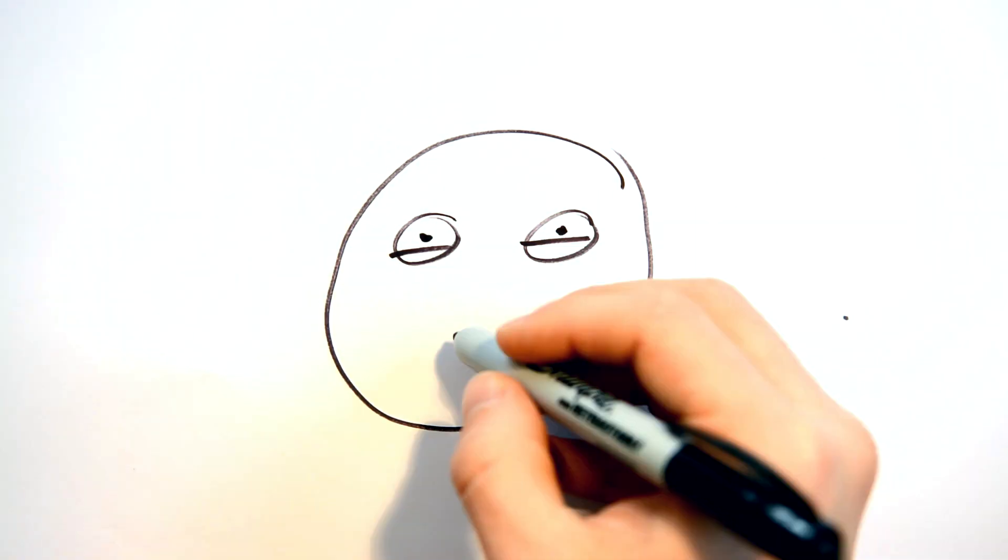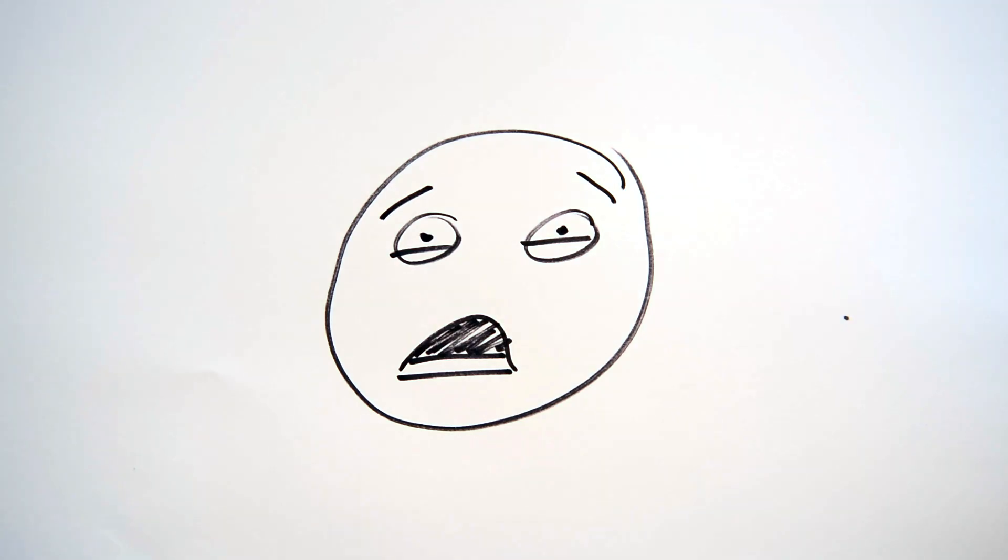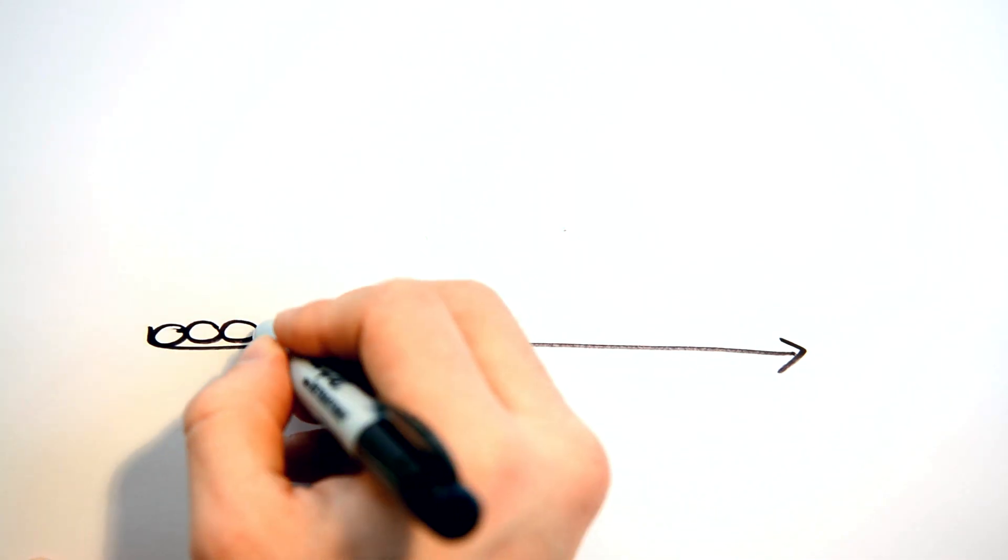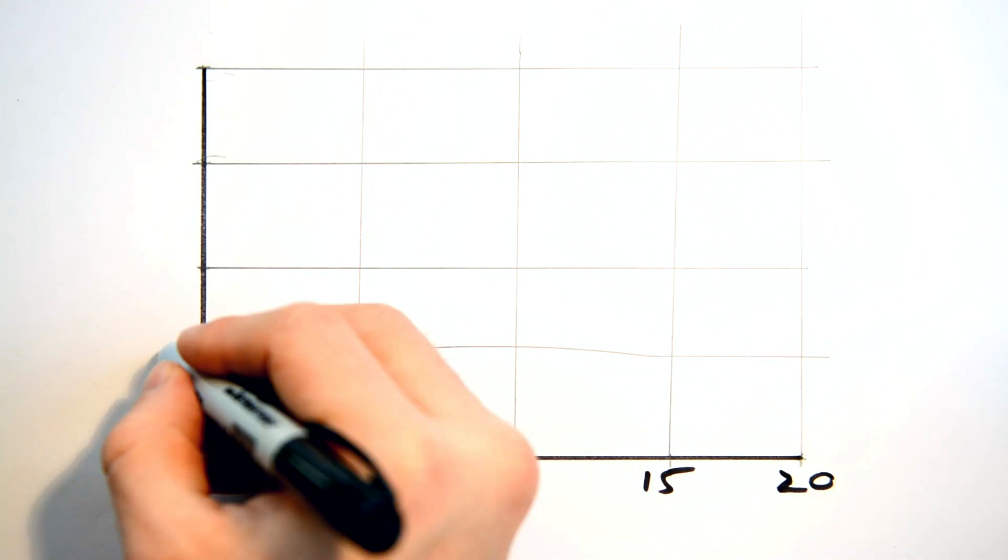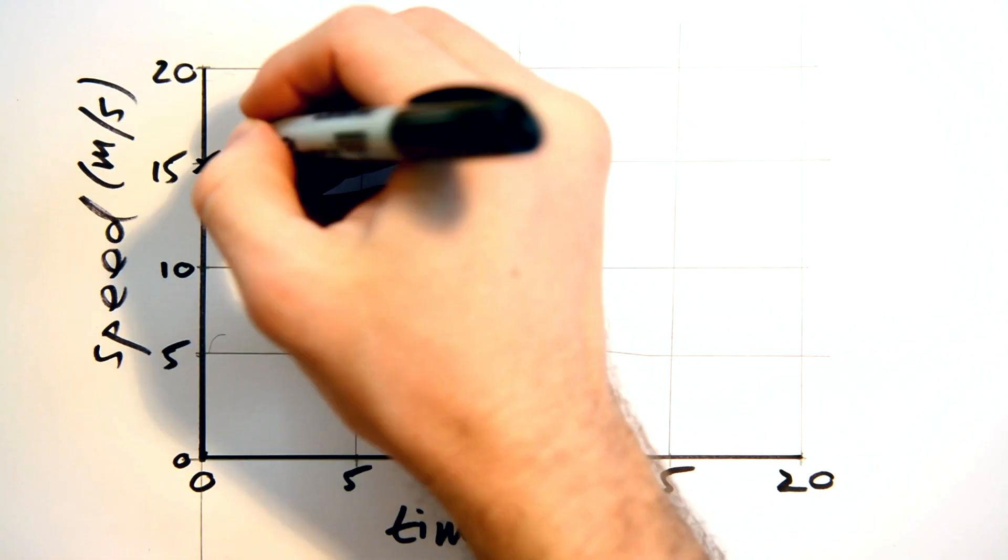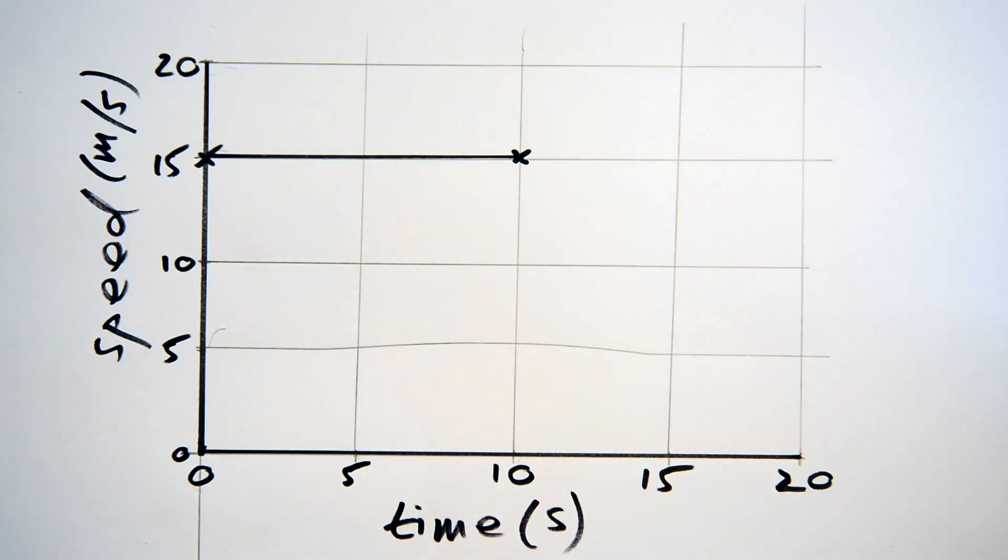So now, Bob needs to cheese it before the fuzz arrive. We'll document his escape by drawing a speed time graph. He first drives off at a steady speed of 15 metres per second for 10 seconds. Now, to draw this on a speed time graph, we draw a horizontal line at 15 metres per second all the way to 10 seconds.